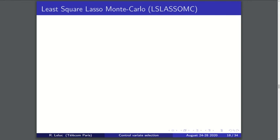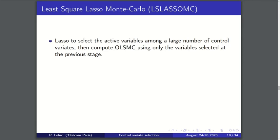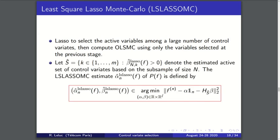Finally, a third Monte Carlo estimate is the least square lasso Monte Carlo estimate, where we perform a first step using the lasso to select the control functions and then we use the control functions selected to perform the ordinary least square. During the first step we can use a sub-sampling strategy to reduce the computation time.